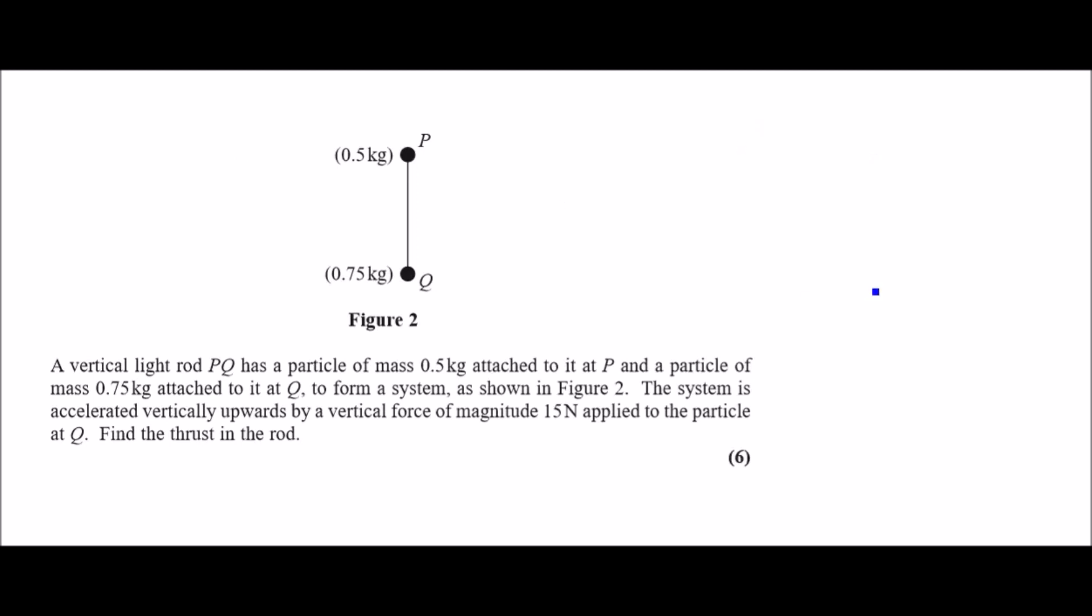So first things first, redraw the system here. We should have P and Q down here, P and Q. Just to put the weights back in, we know that at particle P there is a mass of 0.5 kg, so 0.5g.